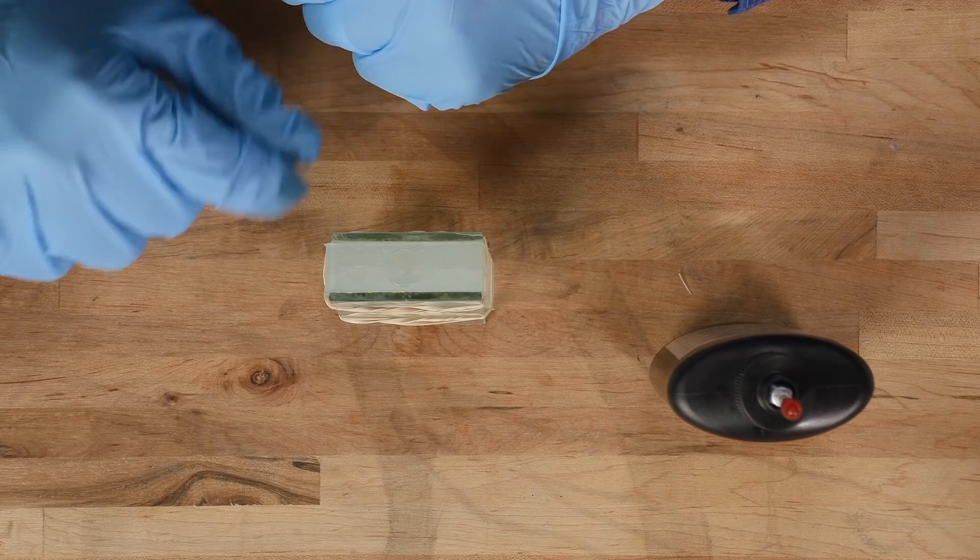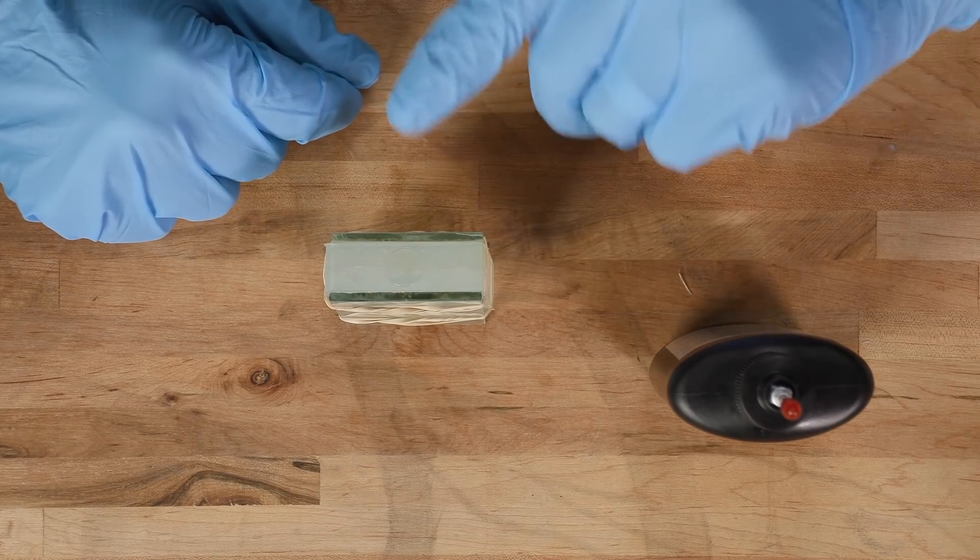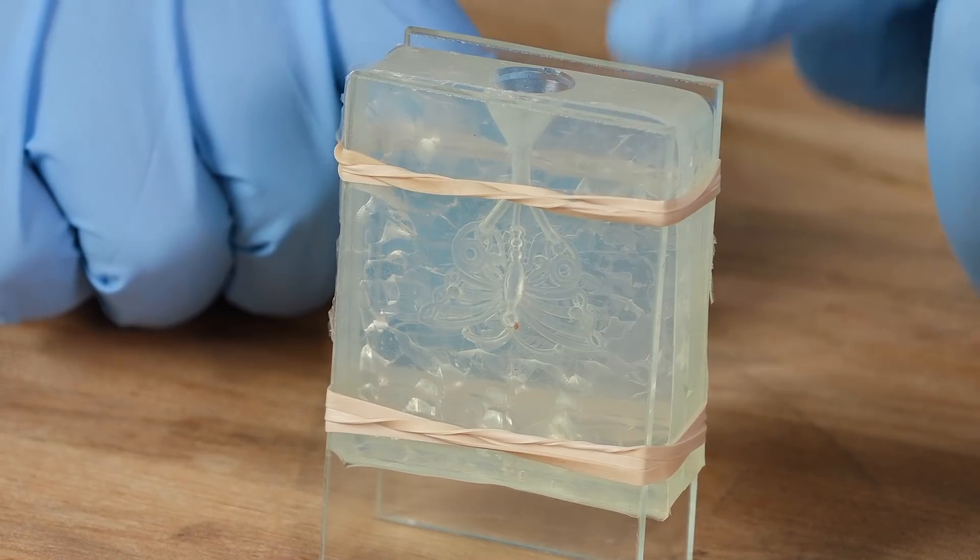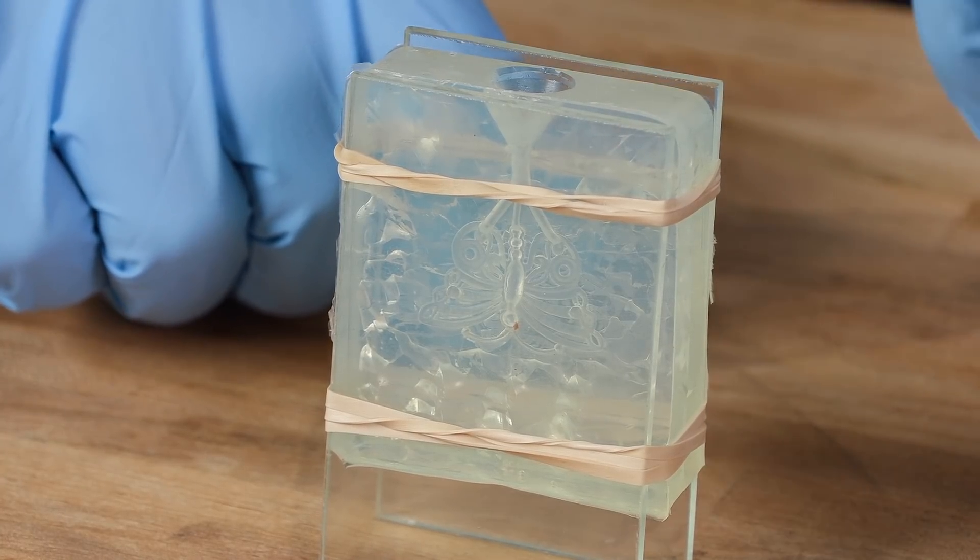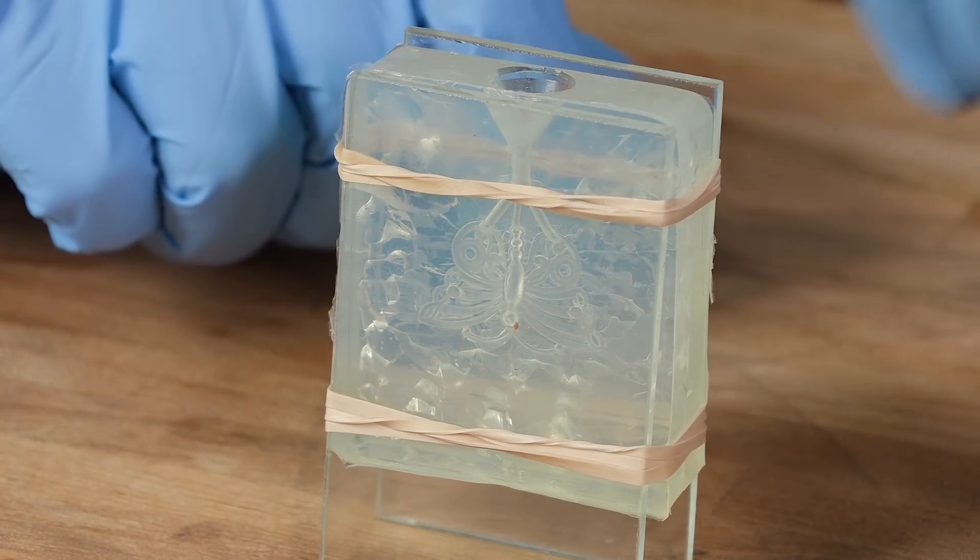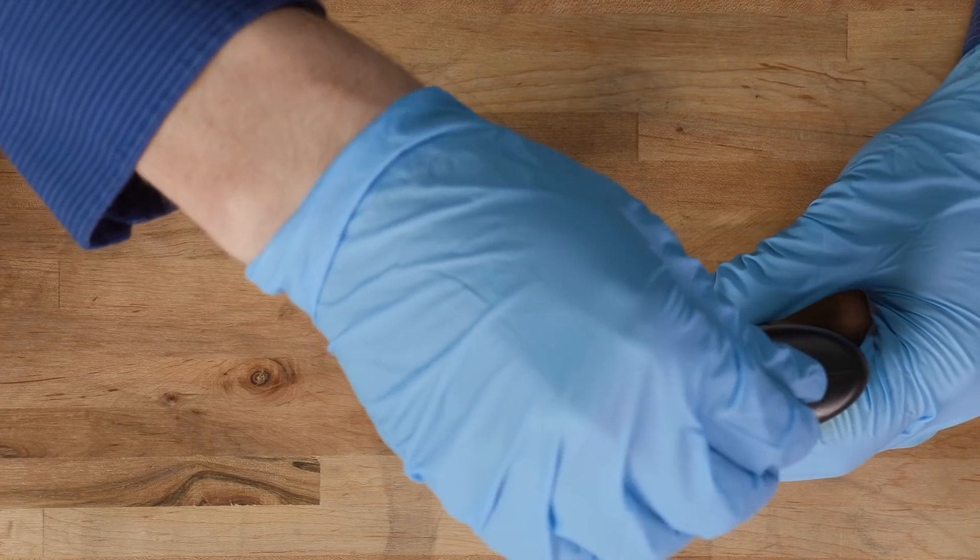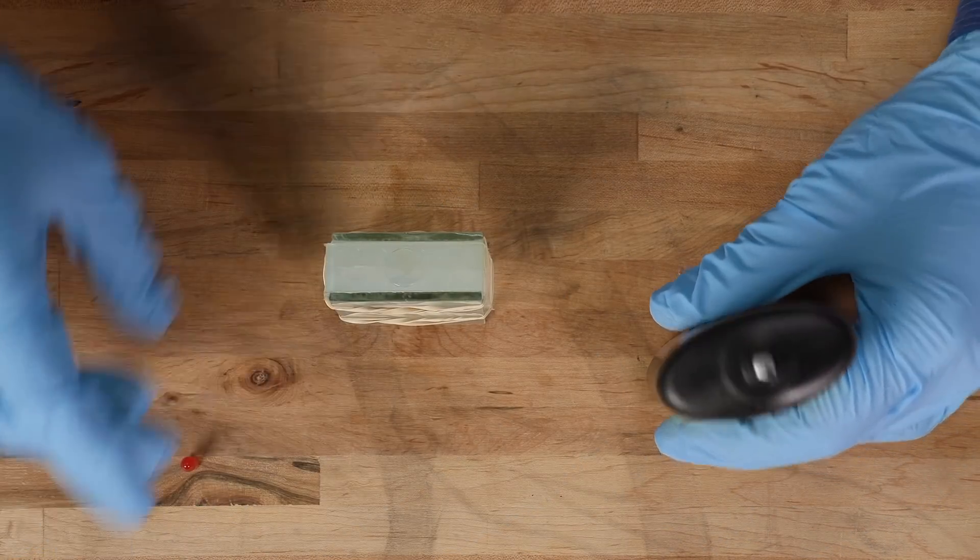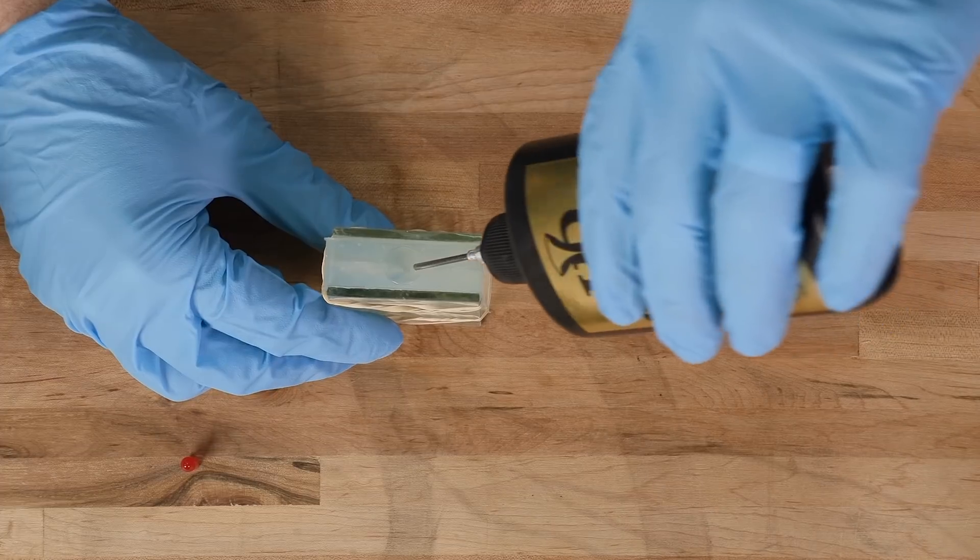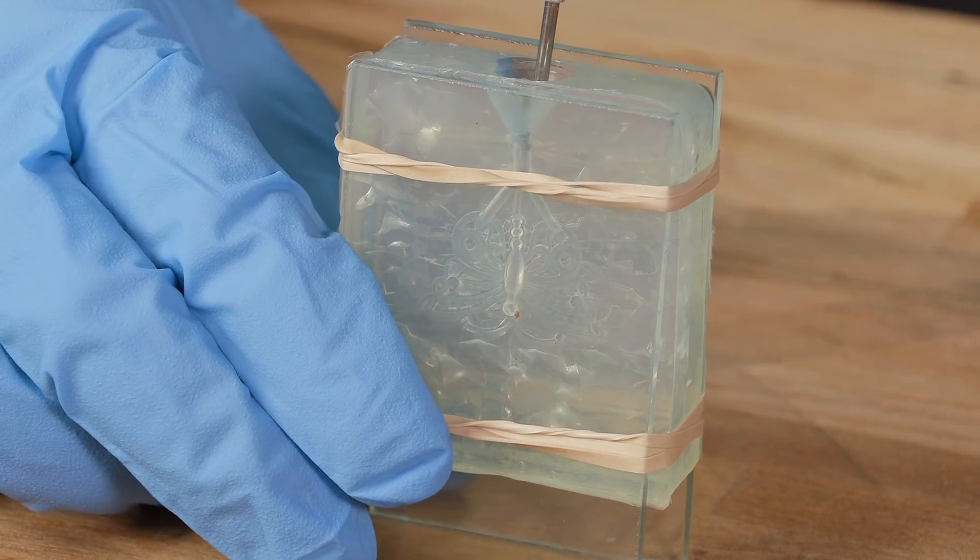Now we're going to inject the master copy into this RTV mold. So we've taken our glass plates, we've sandwiched it on both sides, and we've wrapped the whole thing in rubber bands to distribute the pressure evenly. I'm going to remove the cap from the master copy and inject it into the mold.